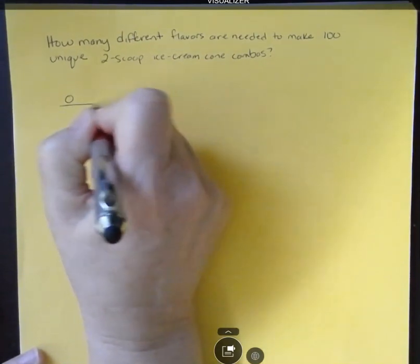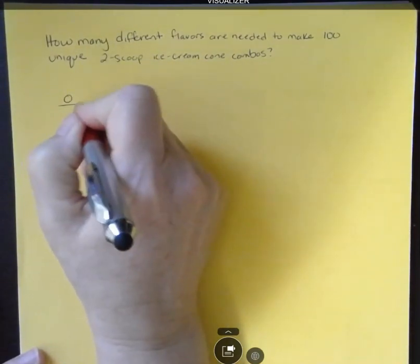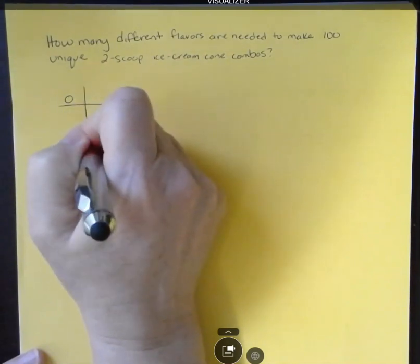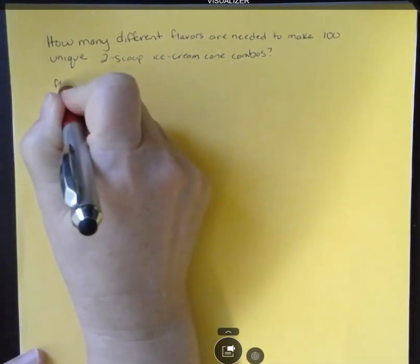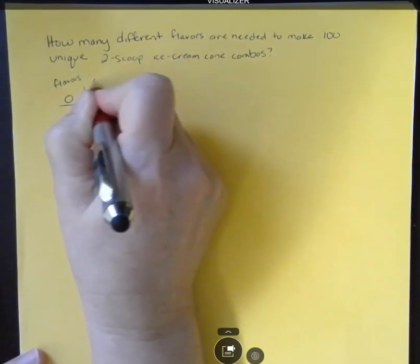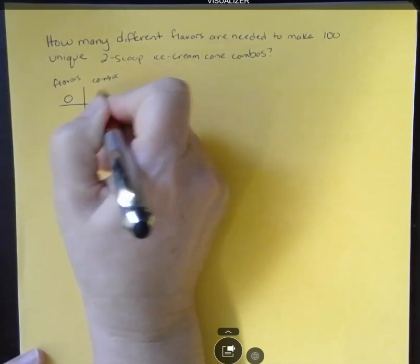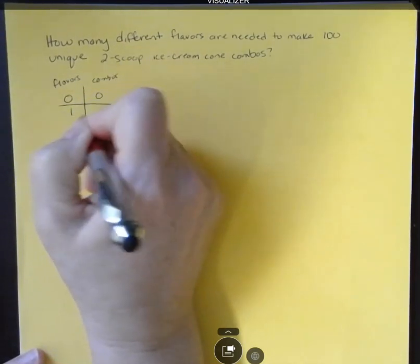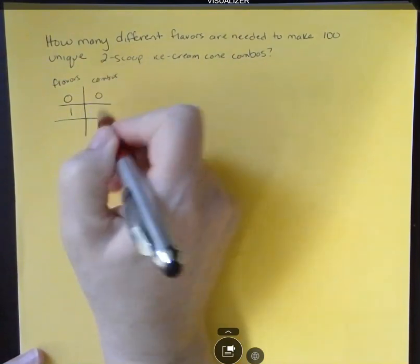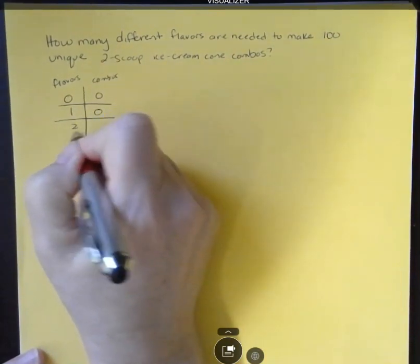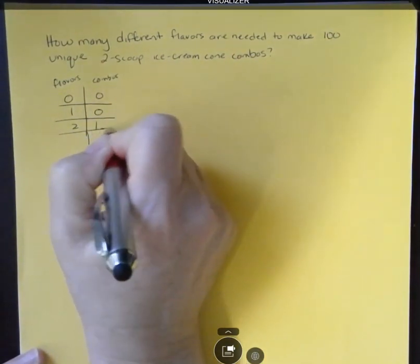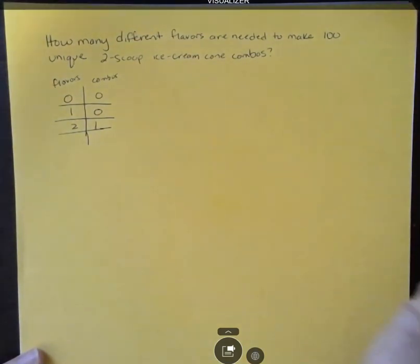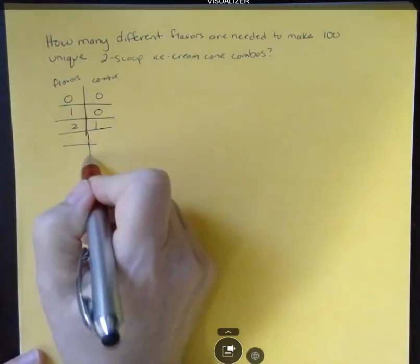So let's say that I had zero flavors of ice cream. If I had one flavor of ice cream, then how many combos could I have? None. If I had one flavor of ice cream, how many two scoop ice creams could I have? None. If I have two, I can have one. I only have two flavors. There's only one ice cream cone that could be made.